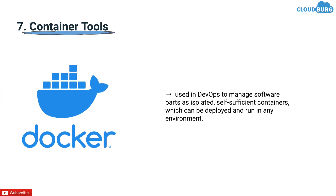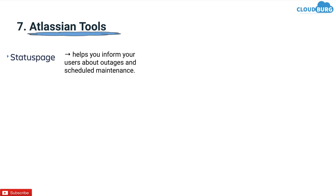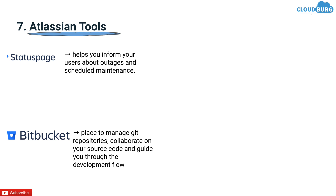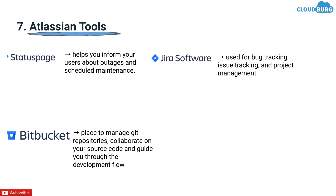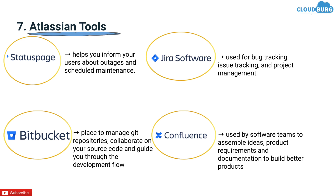Next under the category is container tools. Docker is used in DevOps to manage software parts as isolated, self-sufficient containers which can be deployed and run in any environment. The next category is Atlassian tools. These include StatusPage, which helps you inform your users about outages and scheduled maintenance. Bitbucket is a place to manage Git repositories, collaborate on your source code and guide you through the development flow. Jira is used for bug tracking, issue tracking and project management. Confluence is used by software teams to assemble ideas, product requirements and documentation to build better products. All of these are top demanding Atlassian tools.